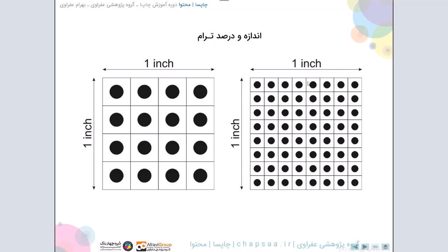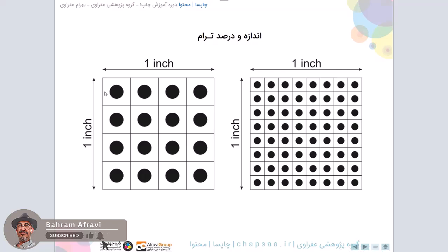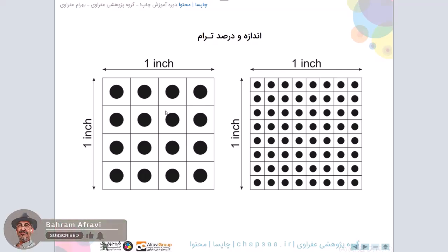اگه دقت بکنید، اندازه ترام یا LPI در این قسمت و این قسمت تفاوت دارن - این LPI اش بزرگتر از این شده. شما اینجا دو، چار، شش، هشت سلول ترام در یک اینچ میبینید. اینجا چار تا سلول ترام در یک اینچ هست. اما در نظر داشته باشید که این قسمت و این قسمت درصد ترامشون یکیه - یعنی شما وقتی که این دوتا کار چاپ شده رو ببینید، هر دو خاکستری حدوداً ۲۵ درصد میبینید.